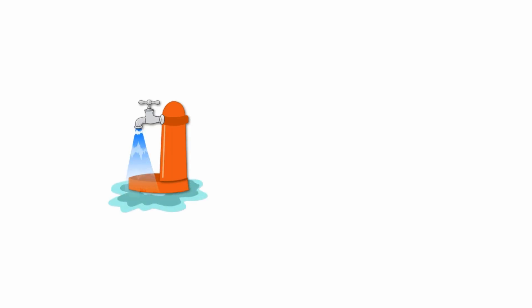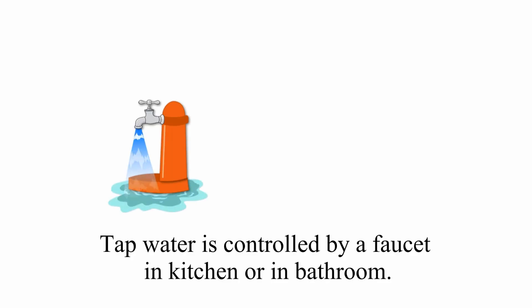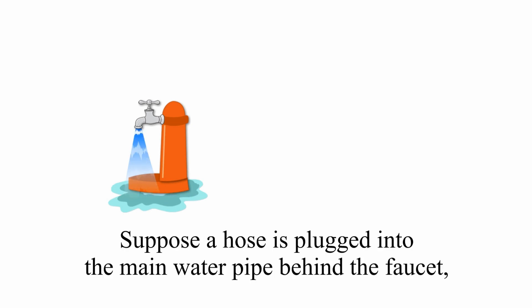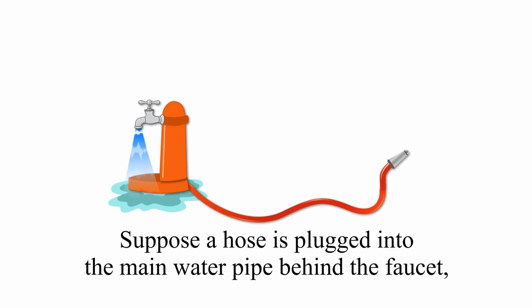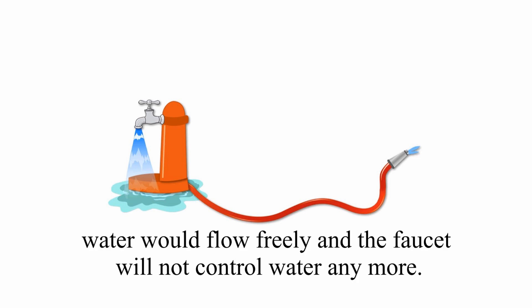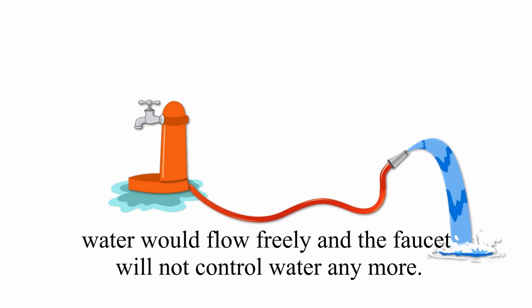Look at another example. Tap water is controlled by a faucet in the kitchen or in the bathroom. Suppose a hose is plugged into the main water pipe behind the faucet — water would flow freely and the faucet will not control water anymore.